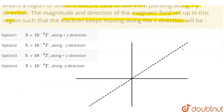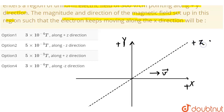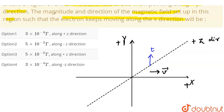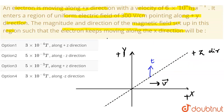So let's suppose that in the positive x direction an electron is moving. Here is its velocity pointing towards x direction, this is y direction, this is positive y direction and this is positive z direction. An electric field is set up in the positive y direction. We have to set up a magnetic field such that the electron keeps moving along the positive x direction.